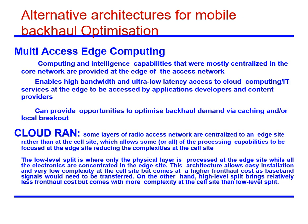Cloud-RAN is where some layers of the radio access network are centralized to an edge site rather than at the cell site, allowing some processing capabilities to be focused at the edge site, reducing complexities at the cell site. This architecture is suitable in the small cell era where only little space and cost is affordable at the cell site, while it may not be suitable for traditional macrocell base stations as they would need to process a significant load of signals. Heterogeneous networks with many small cells would benefit from this architecture.